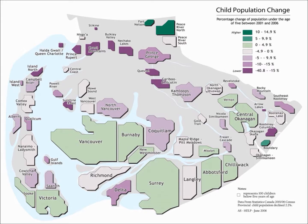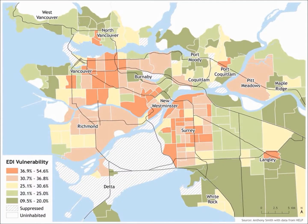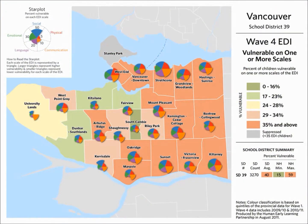Particularly at UBC, I worked with Clyde and a team at the Human Early Learning Partnership. Our purpose was to collect data from kindergarten teachers on the state of child development for all kindergarten-age students in BC every year. The product of that is a data set called the Early Development Instrument. Red is bad — that's the takeaway. Up to 30% of the children in our province are vulnerable on the physical, social, emotional, cognitive, and linguistic scales.